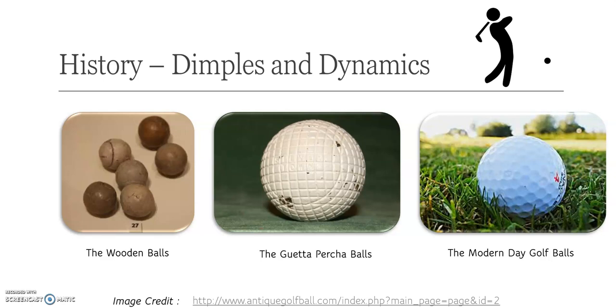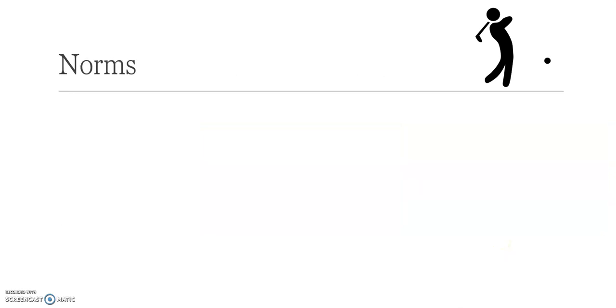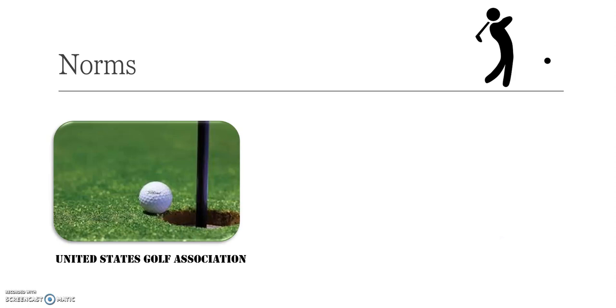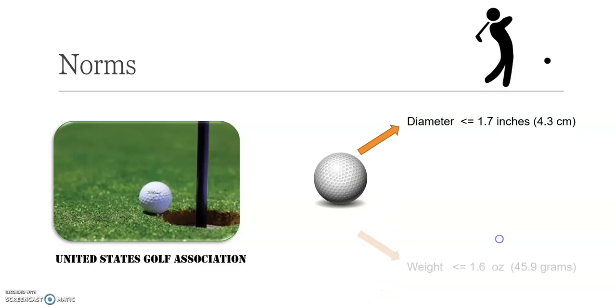Let's move on to the norms. The United States Golf Association is one of the oldest associations. The diameter of this ball is roughly 4.3 centimeters and the weight is 45 to 46 grams. A very tiny ball, but it's doing wonders in such a way that we're here to understand the beauty of the science behind the flight of this beautiful ball.